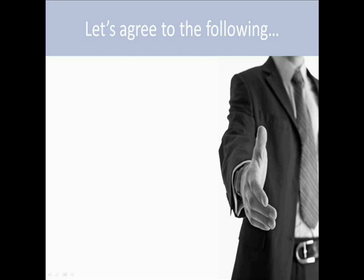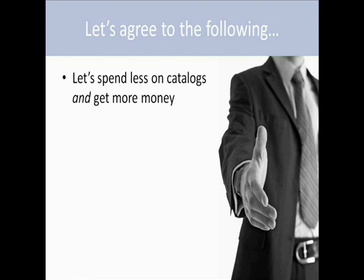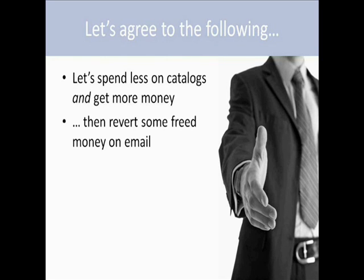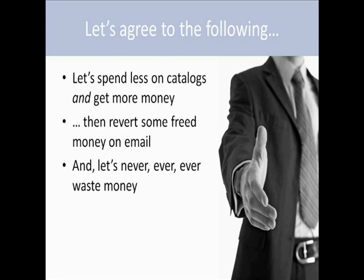As we wrap up, here's my polemic: let's all agree to spend less on catalogs and get more money at the same time. We do this through a smarter mailing list. We can also revert some of that freed money to email to do it more aggressively, because it's really common and it's how a lot of people want us to communicate with them today. And let's have a process for catching wasted money — every time we find ourselves wasting it, let's not do that again. Be experimental about it instead, while making sure we're getting more money for all those efforts.